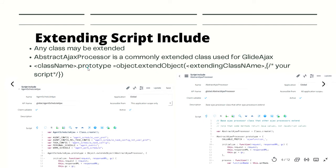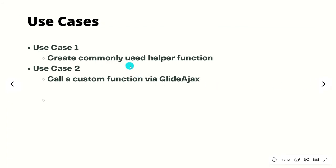We have two use cases. The first is creating a commonly used helper function — the most common practice. For example, if we perform calculations often, we abstract the calculation into its own Script Include, then call it with a few arguments without having to rewrite the calculation every time. The second use case is calling a custom function via client Ajax. We will look into the scripting part in coming tutorials, but for now let's move to the demo.